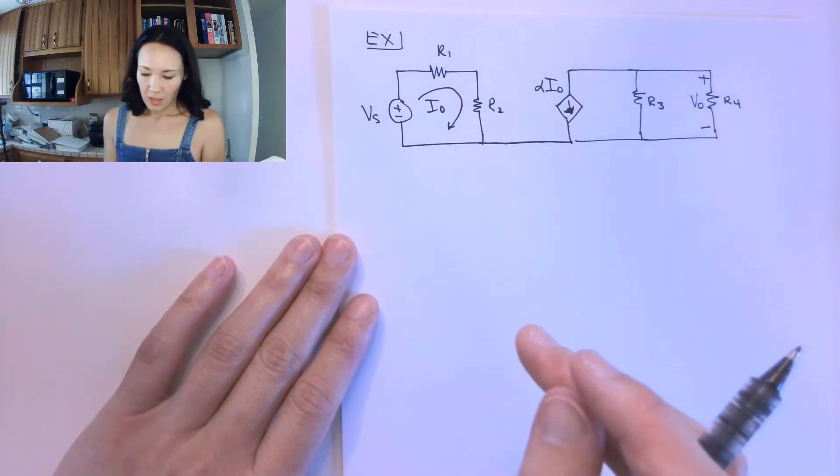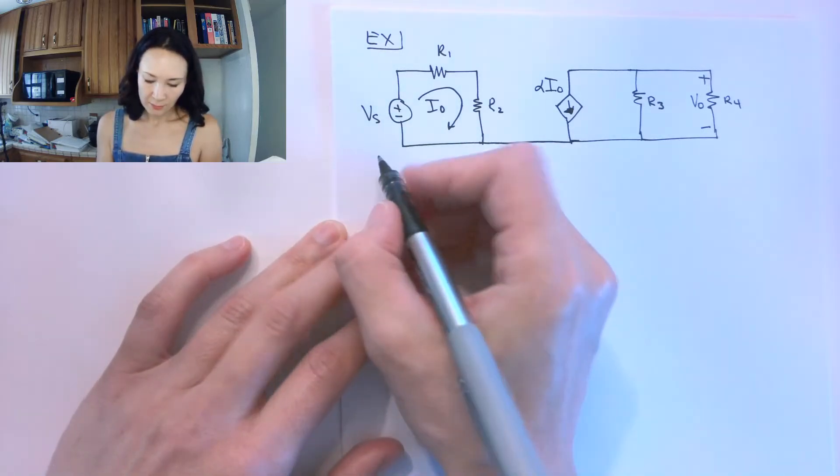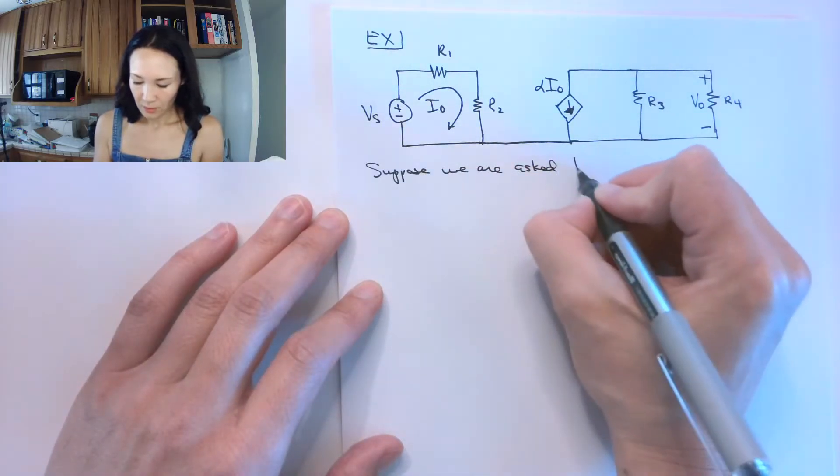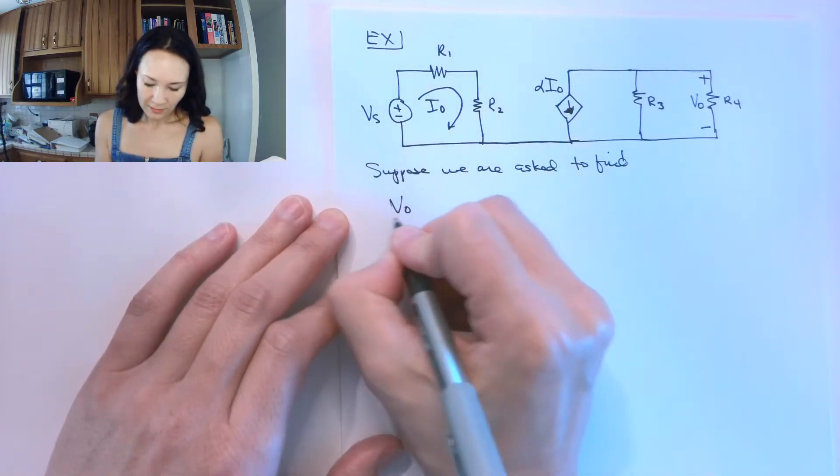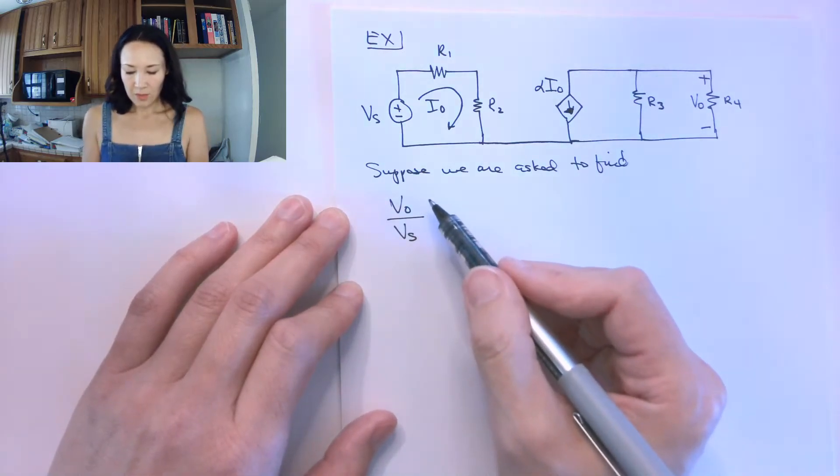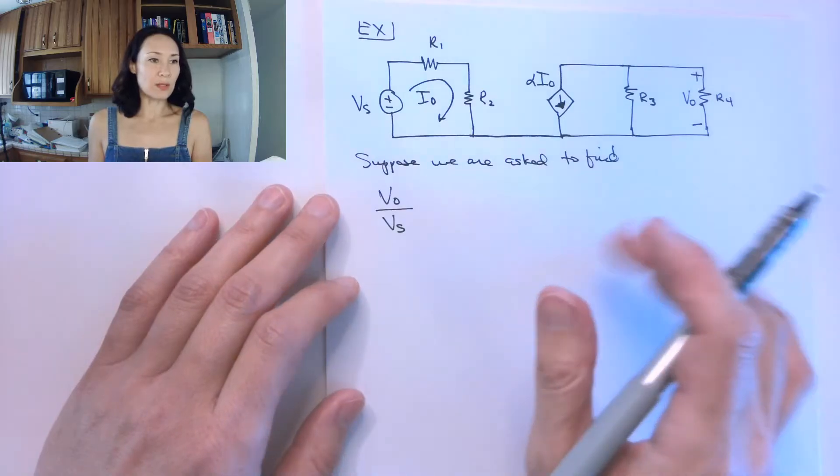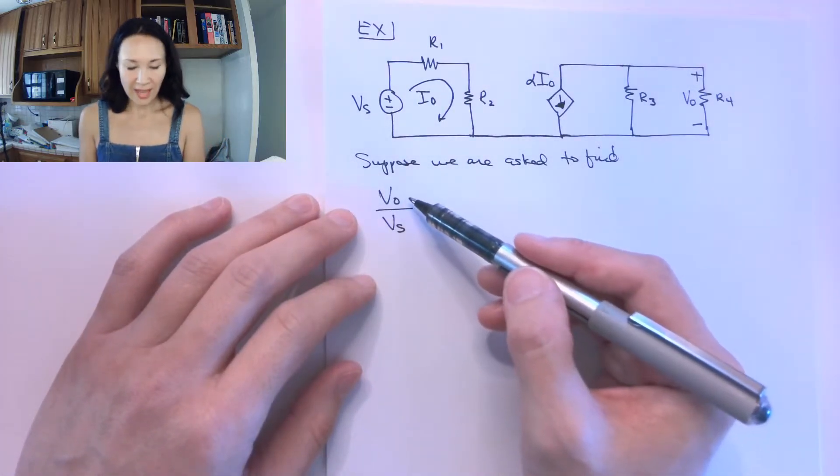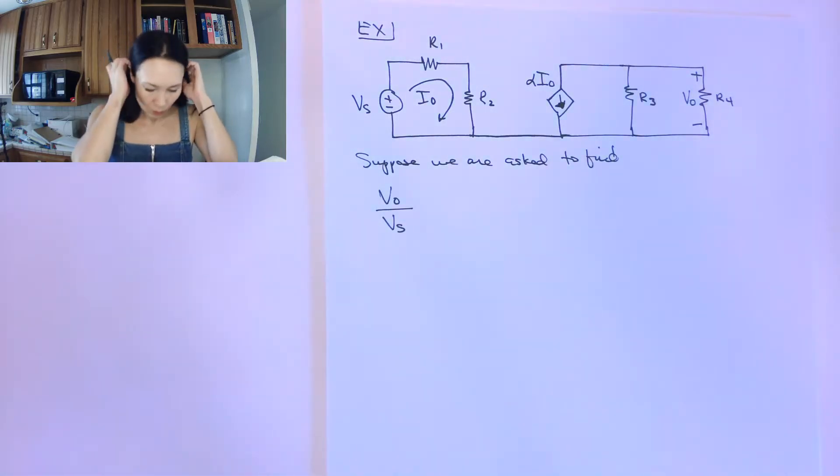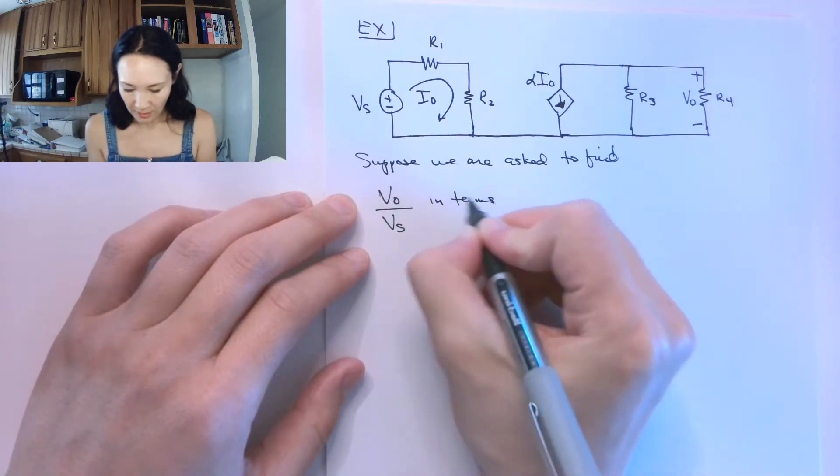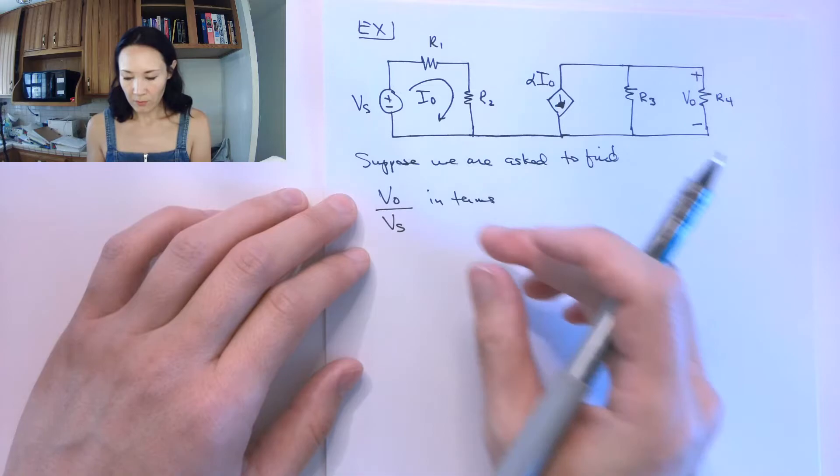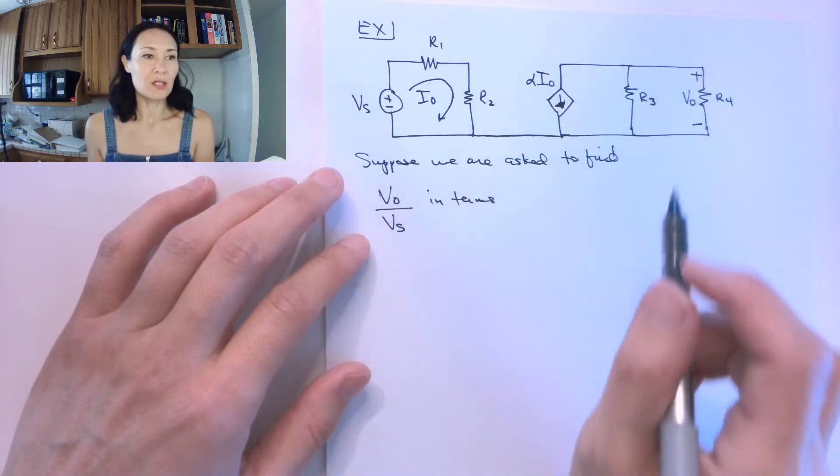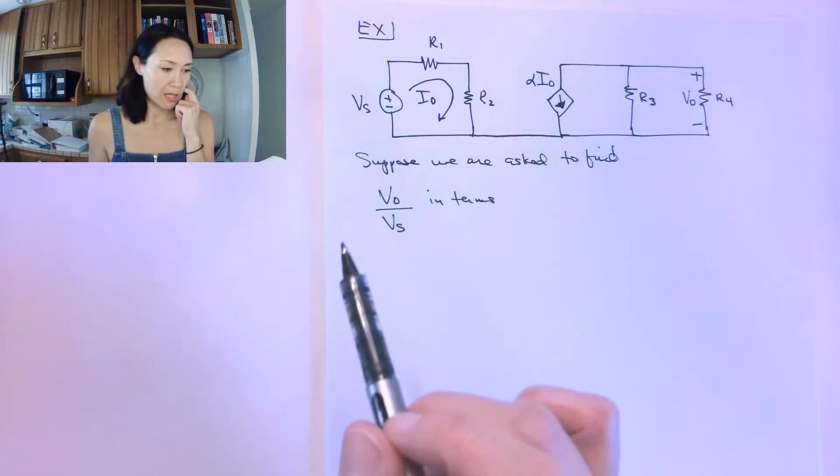So in this problem, suppose we are asked to find V0 over Vs. Now, this problem formulation is new to us so far in this class, but this is getting us primed for doing amplifier circuits. This is actually Vout over Vs, and we want to find this expression in terms of all the other circuit elements that are in here so we can easily tweak our amplification factor by changing the resistance values.